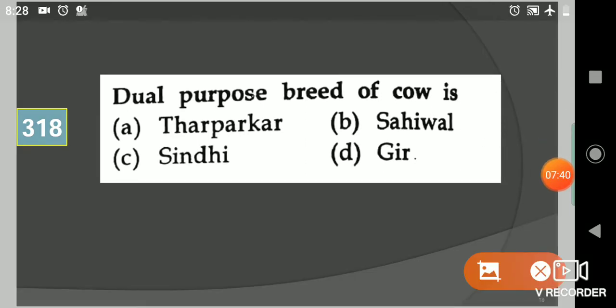Next question: Dual purpose breed of cow is? Your options are Tharparkar, Sahiwal, Sindhi, Gir. Your answer is Tharparkar.